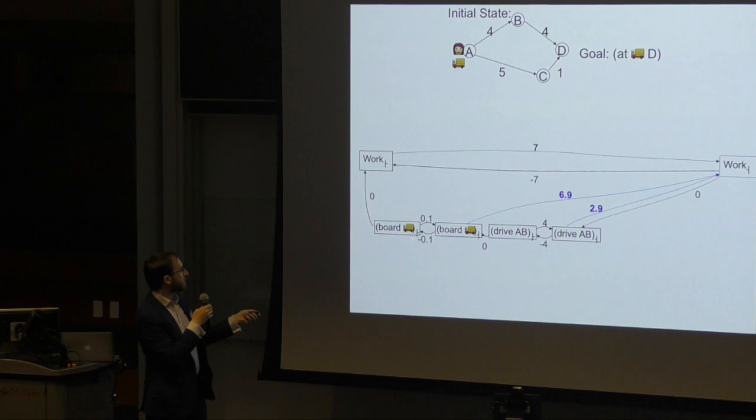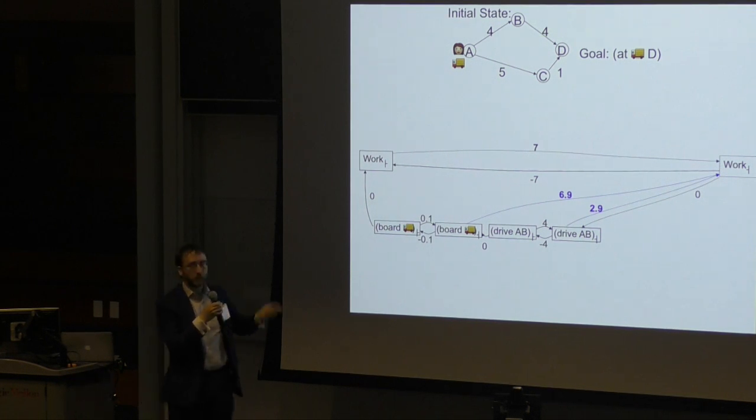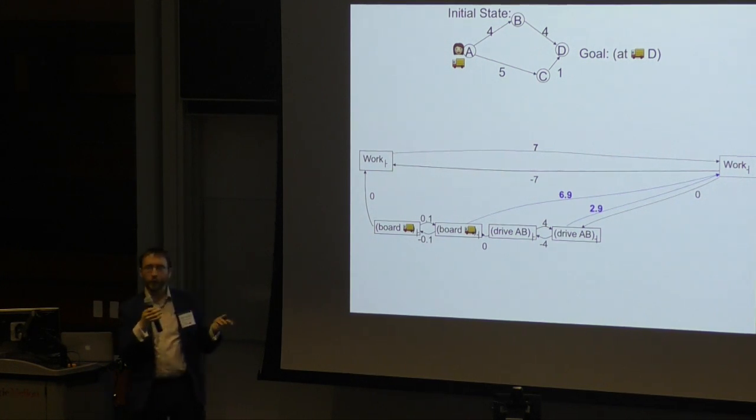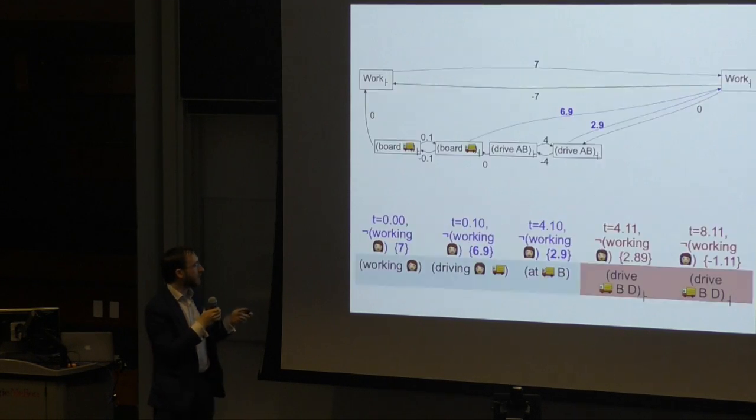So take that away from 7 you get 2.9. So the STN solver will give us this information and what we want to be able to do, and what I'm going to show you essentially highlight how we do, is we can get this information into the heuristic.